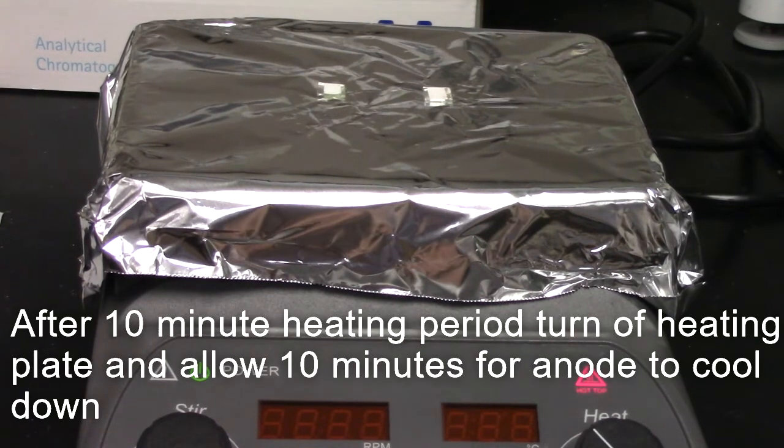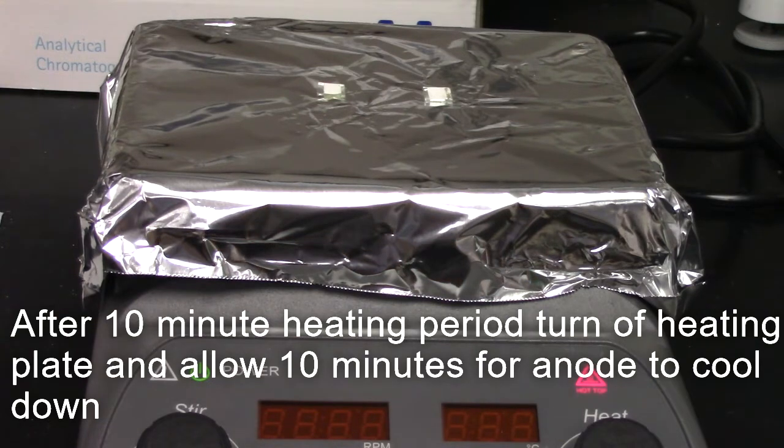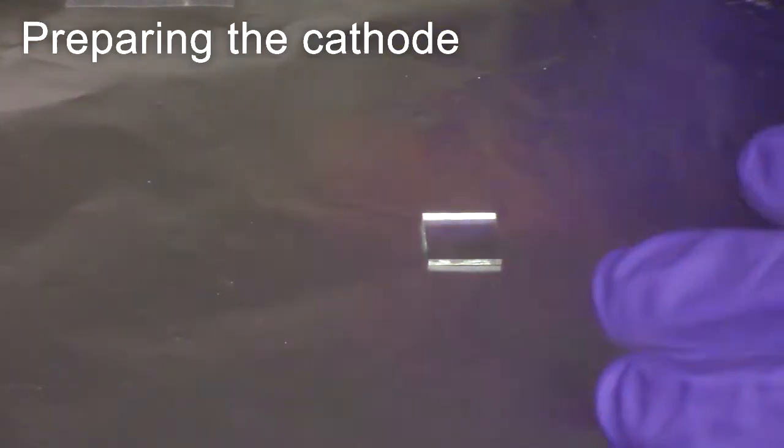After heating for 10 minutes at 50 degrees centigrade, turn off the heating plate and allow the anodes to cool for 10 minutes before removing.